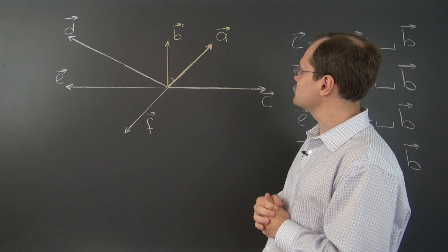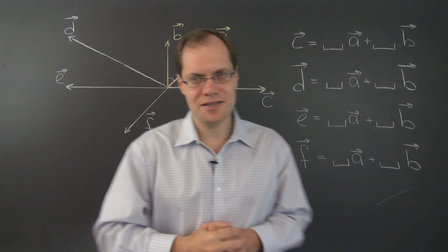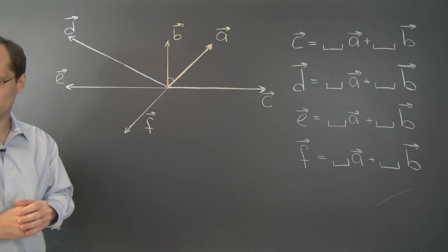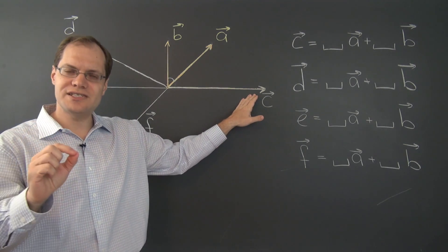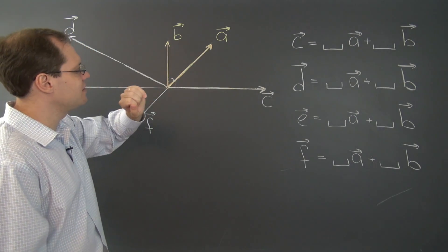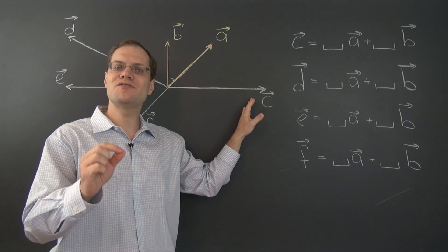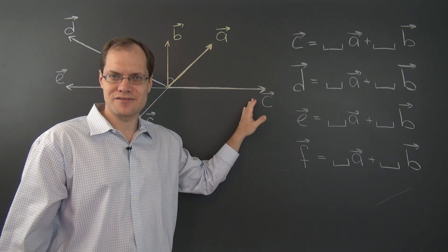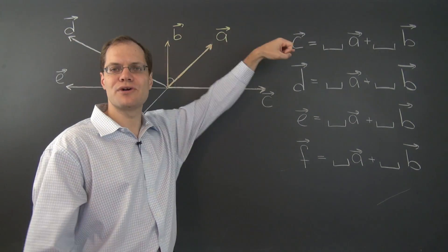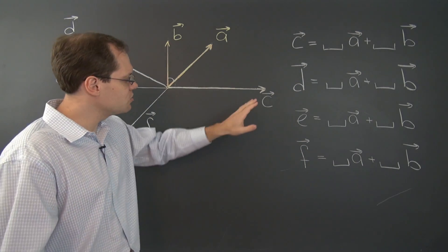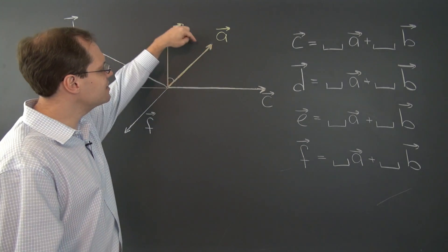Alright, so let's see how it goes. Let's start with the vector c. Let me step over here and maybe step partially out of the shot. So the vector c. To see what linear combinations of a and b produces c, you have to be pretty good at subtracting vectors.